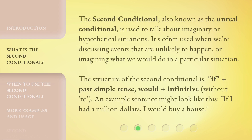The second conditional, also known as the unreal conditional, is used to talk about imaginary or hypothetical situations. It's often used when we're discussing events that are unlikely to happen, or imagining what we would do in a particular situation.